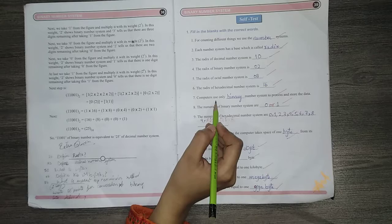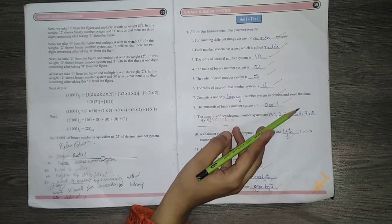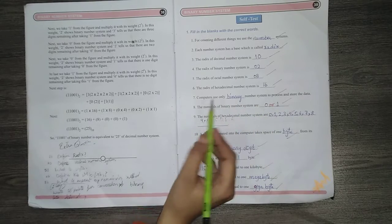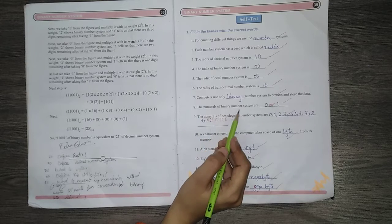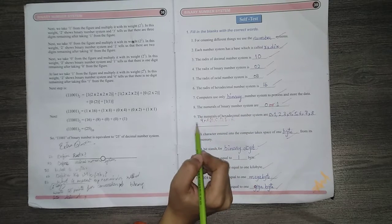Number 7, computer use only binary number system to process and store the data. Number 8, the numerals of binary number systems are 0 and 1.